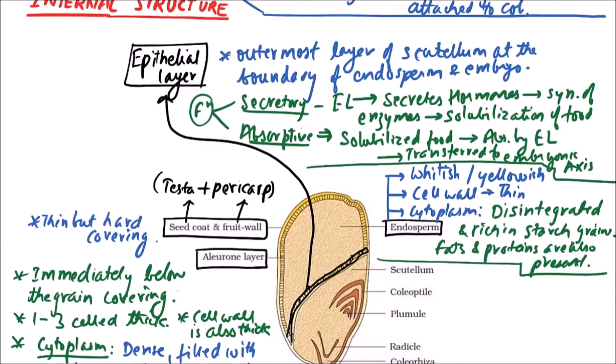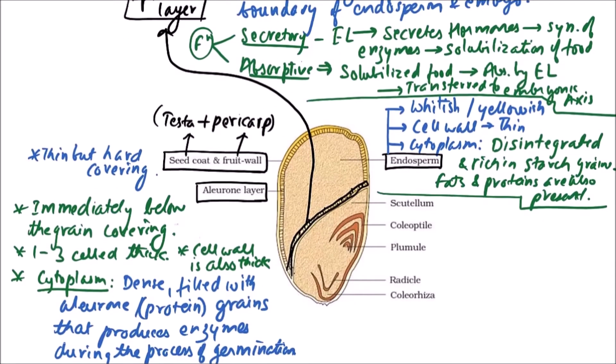Next structure is scutellum. Now scutellum is the single cotyledon of maize grain and it occupies the major portion of embryo region of grain.